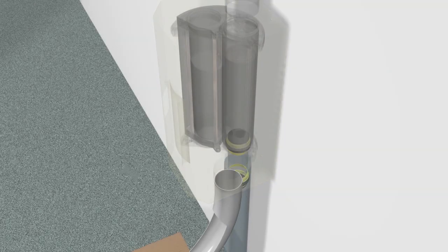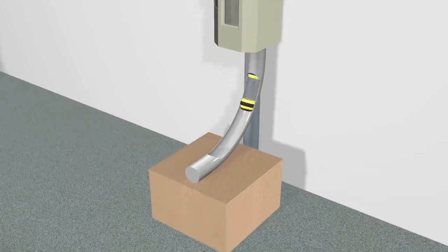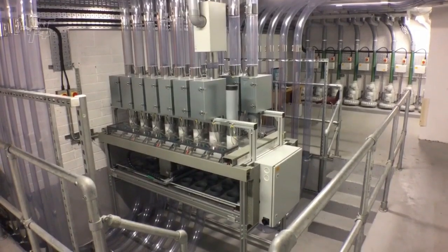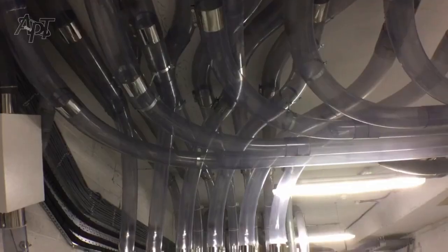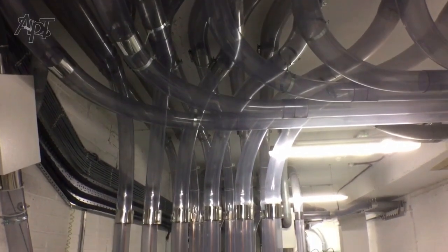The first patent was registered by Josiah Latimer Clark in 1854 for the transport of mailings and parcels via pneumatic tubes. He also installed the above-mentioned first urban pneumatic post in London.